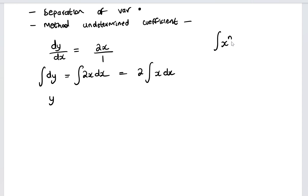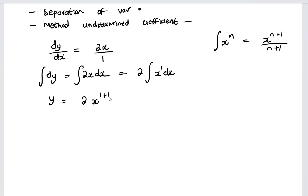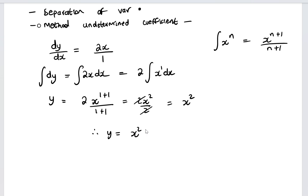If we're integrating x to the power of some power, the answer is given by adding 1 to that power and dividing by the new power. Here we've got x to the power of 1, so we add 1 to get 2, giving us 2x² over 2. The 2's cancel and our answer is x squared. Therefore the solution to this differential equation is y equal to x squared.